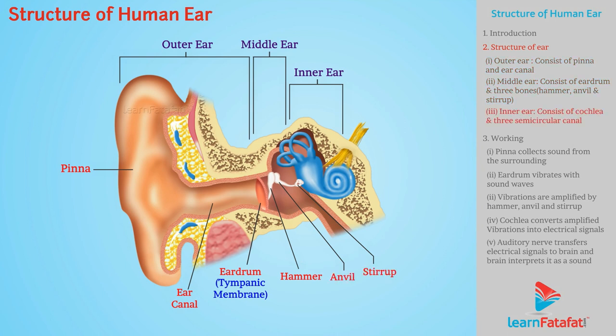The inner ear consists of the cochlea and three semicircular canals. The inner ear is connected with the auditory nerve.